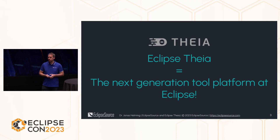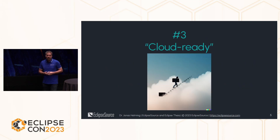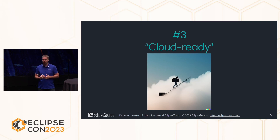So what have we accomplished in the last seven years? I only have 20 minutes so I picked three accomplishments that I think are important, and I go from place three to one to make it more exciting. On place three: we are now cloud ready. What do I mean by that? If we build a tool based on web-based technologies — HTML, client-server architecture and so on — we can actually deploy it in the cloud, and that means you can provide access to the tool via a browser to any user all around the globe at any time, just by clicking a URL.